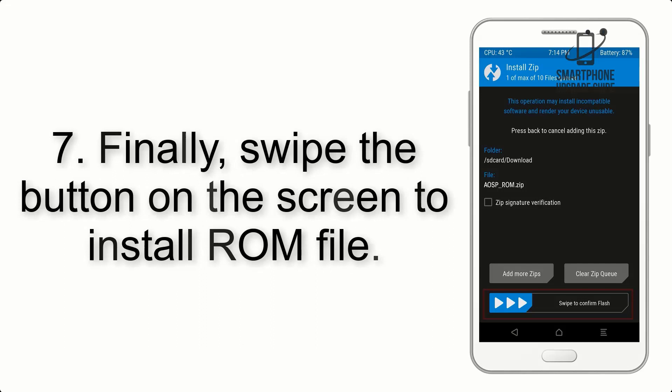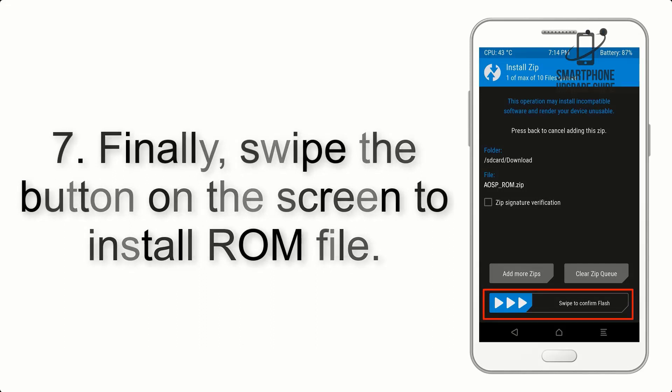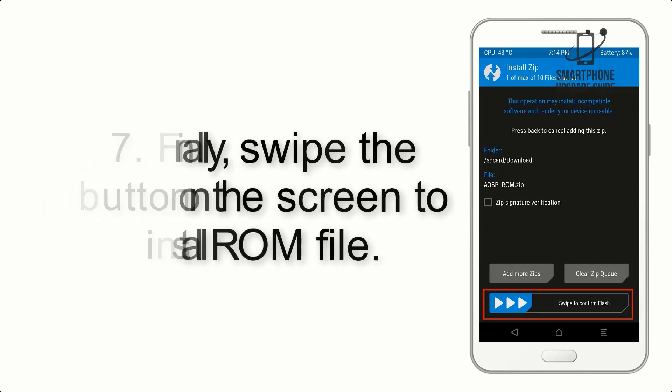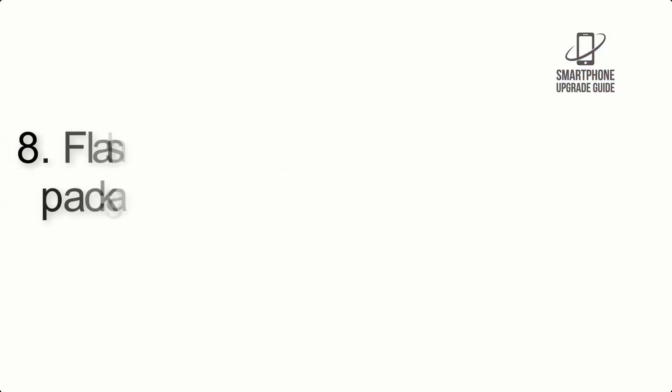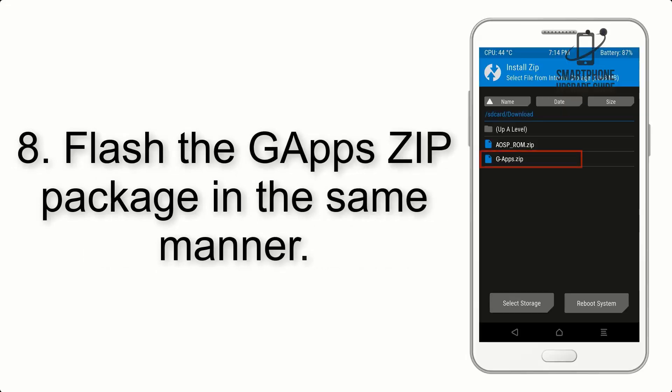Step 7: Finally, swipe the button on the screen to install the ROM file. Step 8: Flash the GApps ZIP package in the same manner.